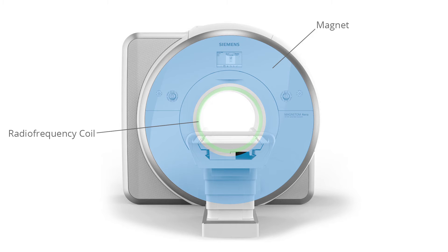The radiofrequency coil applies an intense pulse of radiofrequency energy, which causes the unmatched protons to spin at a specific frequency and in a certain direction. Once the pulse is turned off, the hydrogen protons slowly realign within the magnetic field.